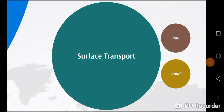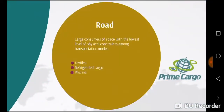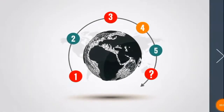Surface transport refers to the movement of goods by road, train, and pipeline. Rail transportation offers the highest capacity — with a 23,000-ton fully loaded coal unit train being the heaviest load ever carried — and uses fewer resources at low cost. Road transportation is usually surfaced with gravel, asphalt, or concrete, supporting land passage by foot or by a number of vehicles. It is a large consumer of space with the lowest level of physical constraints among transportation modes, and a variety of vehicles transport goods to various destinations every day. It is the most easily reachable mode of transportation.